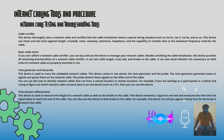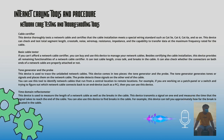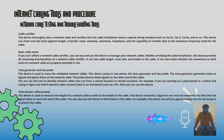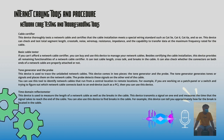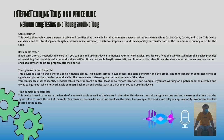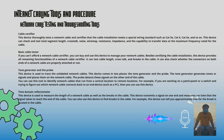A basic cable tester is a more affordable alternative to a cable certifier. It provides most of the remaining functionalities — testing cable length, crosstalk, and breaks in the cable — and can also check whether the connectors on both ends of a network cable are properly attached. A tone generator and probe device is used to trace unlabeled network cables. It comes in two pieces: the tone generator and the probe.